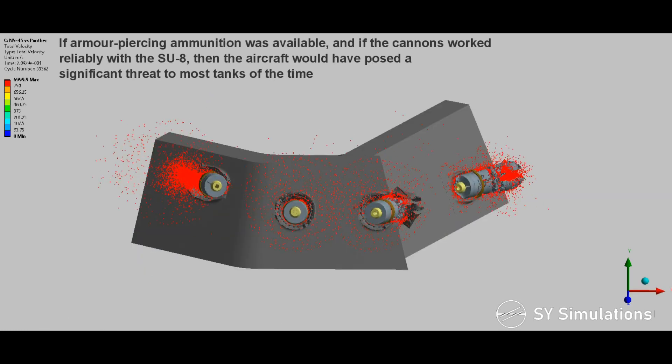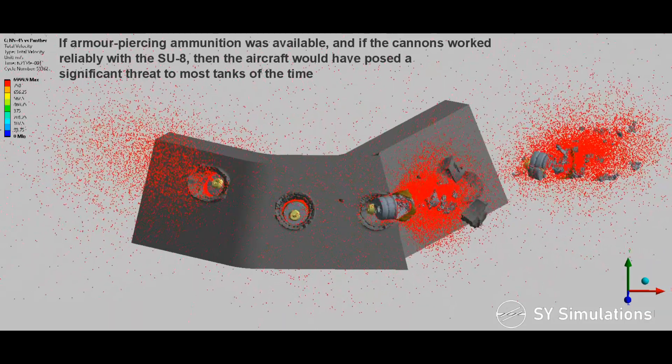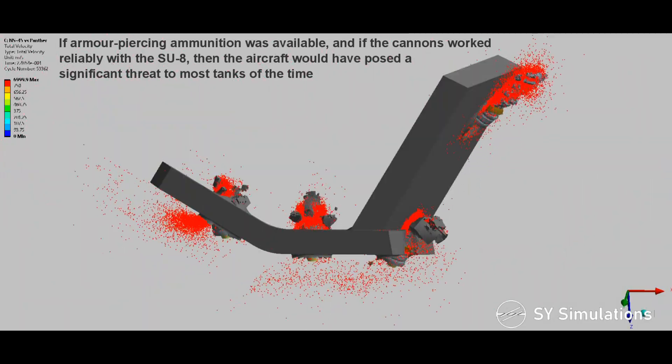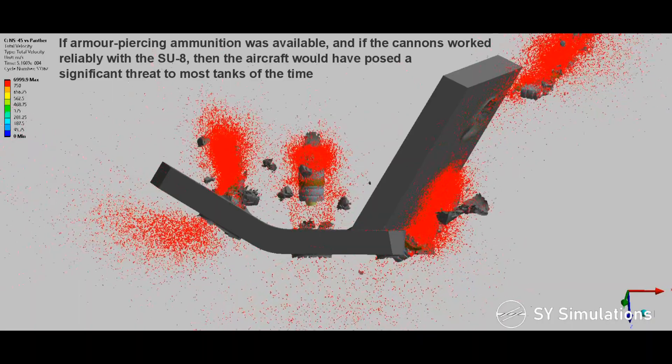If armor-piercing ammunition was available and if the cannons worked reliably with the Su-8, then the aircraft would have posed a significant threat to most tanks of the time.